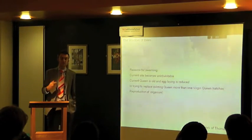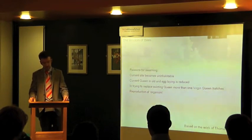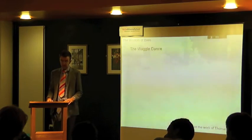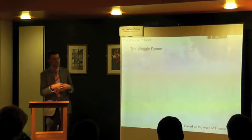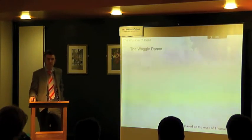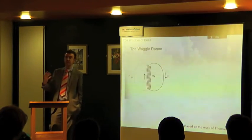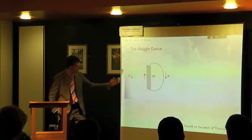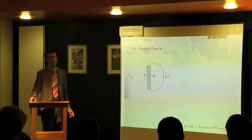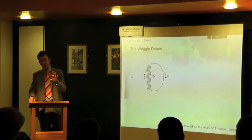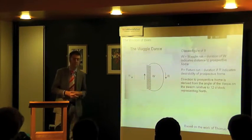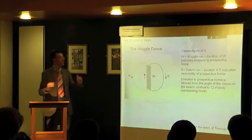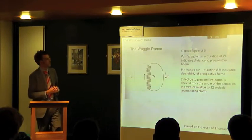This is what we would call the reproduction of the organism. Most of us have heard of the waggle dance, and it is how bees communicate with each other — the opportunity for the individual to pass on information. The waggle dance is made of a classic figure of eight, though the eight doesn't need to be completed. It has the waggle and the return. Each part conveys a huge amount of information. The waggle run duration indicates how far the bees would have to fly. The return run indicates the desirability of the prospective home.